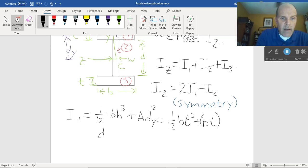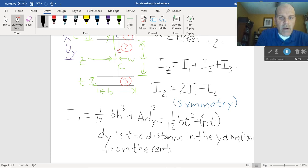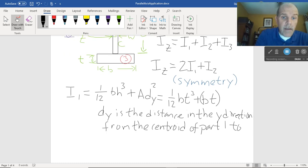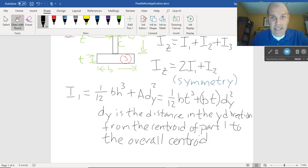It's the distance in the y direction from the centroid of part 1 to the overall centroid. And I'll even put a dy down here in my centroid equation for the overall centroid. So, I'll put a dy back in here, and I'll square it.